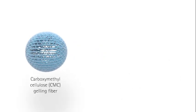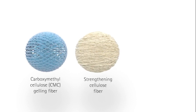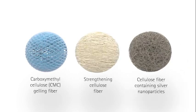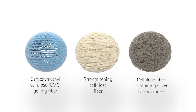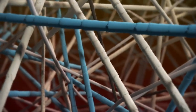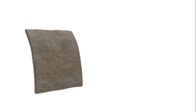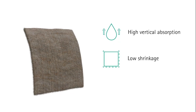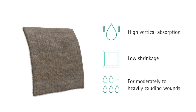The dressing combines carboxymethyl cellulose gelling fiber and strengthening cellulose fiber with cellulose fiber containing silver nanoparticles. Thanks to its revolutionary design, Askina Calcitrol AG+ delivers high vertical absorption and low shrinkage for moderately to heavily exuding wounds.